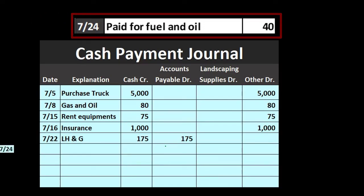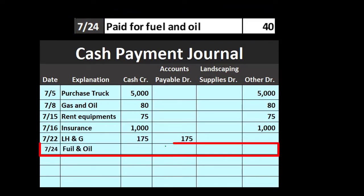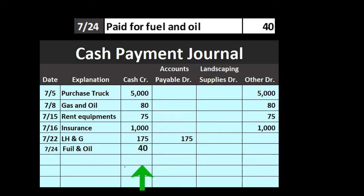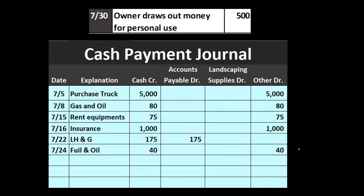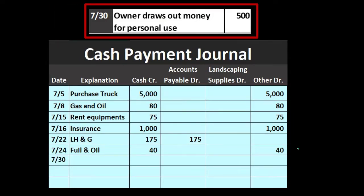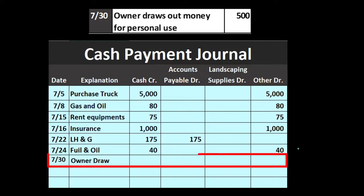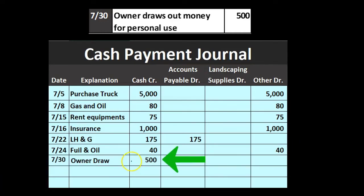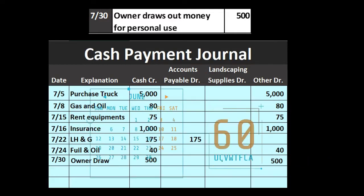On 7/24, paid for fuel and oil — similar to gas and oil above — $40. We put it into the 'other' category for expenses, breaking those out when we make the journal entry at the end. Then on 7/30, the owner draws out money for personal use, $500. We call that 'owner draws,' it brings cash down as always, and the other side goes to 'other.' Draws don't happen all the time — perhaps once a month for the owner's withdrawals.